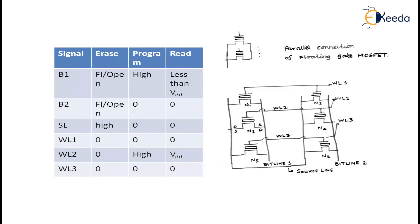Like our NAND-based flash memory, I have a tabulation showing which signals are activated for erase, programming, and read. In NOR, parallel transistors are connected. I have shown a parallel connection of floating gate transistors N1, N2, N3, N4, N5, N6 — six transistors. One terminal of each is connected to the source line, another terminal is connected to bit line 1, and three more terminals are connected to bit line 2. All the gates are given to word line 1, word line 2, and word line 3.